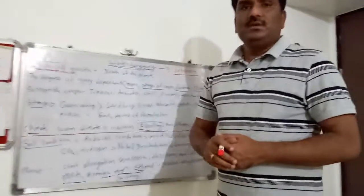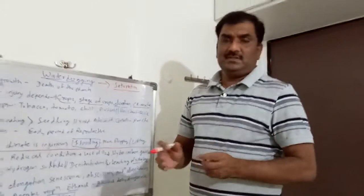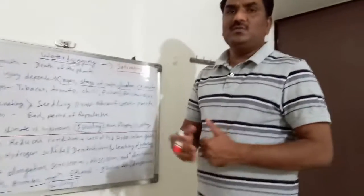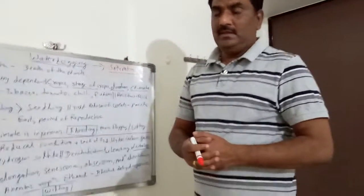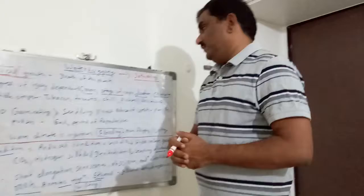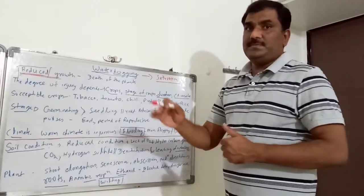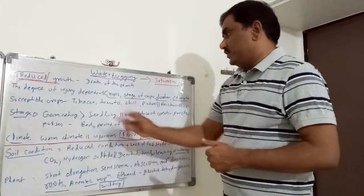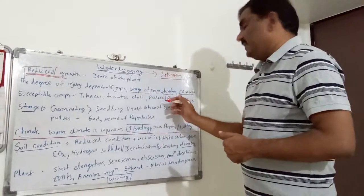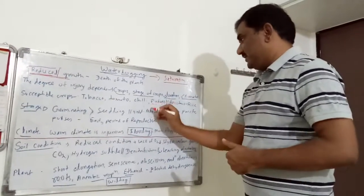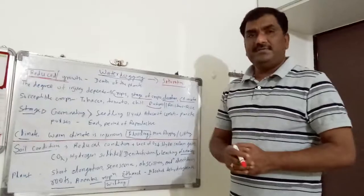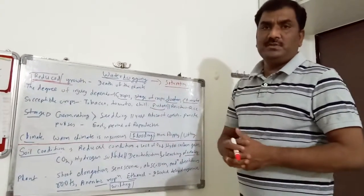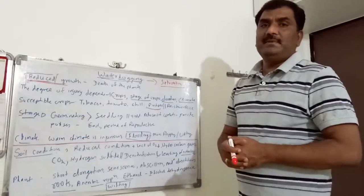In case of crops, there are susceptible crops as well as tolerant crops. The best resistant crop is rice. We should focus on susceptible crops because we want to keep those crops free from waterlogging. Tobacco, tomato, chili, and pulses are susceptible. Pulses are very susceptible to waterlogged conditions.